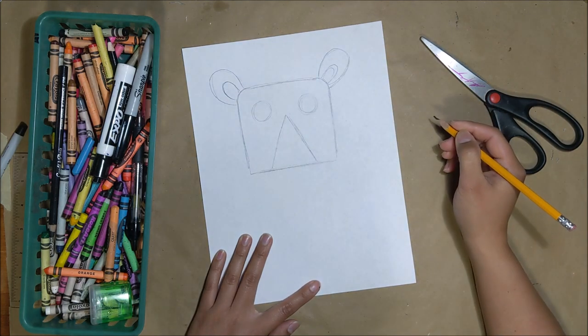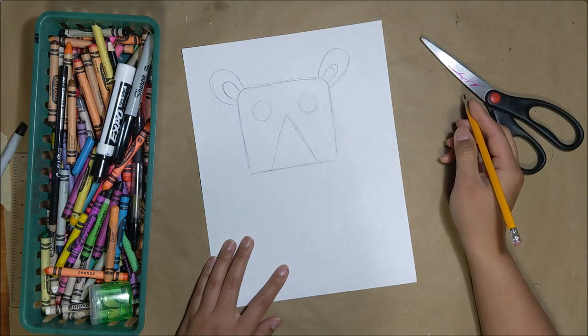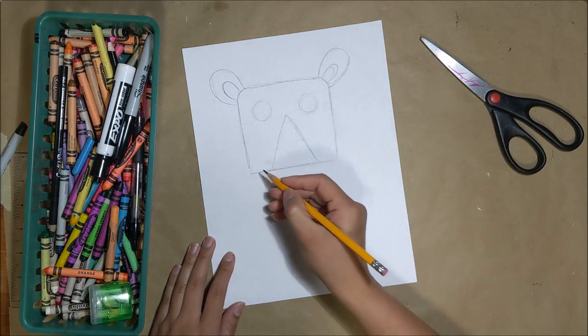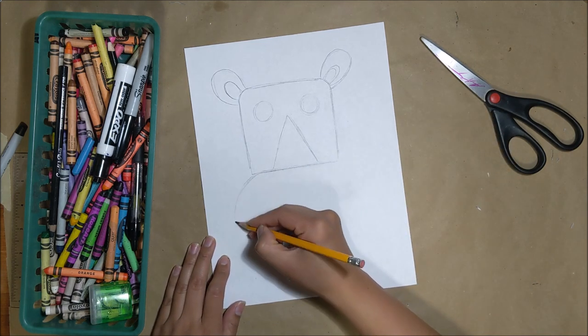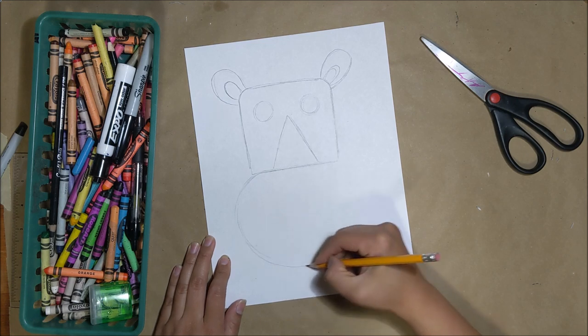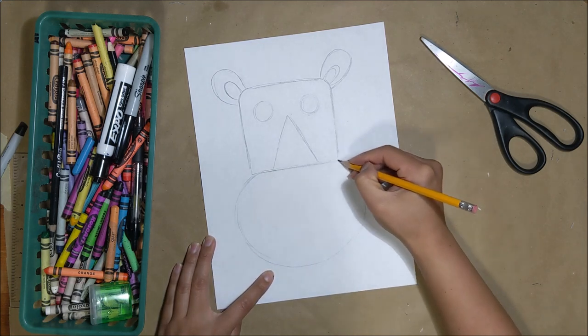For the snout of the lion we're going to create a large oval right below that square. So I'm creating a large curved line for the oval right below the square.